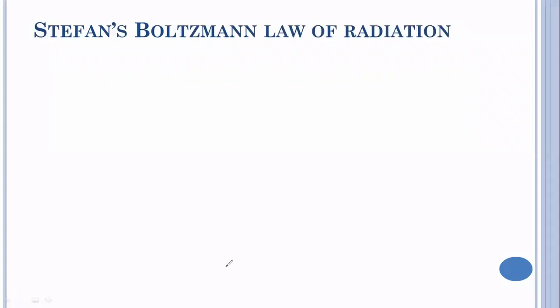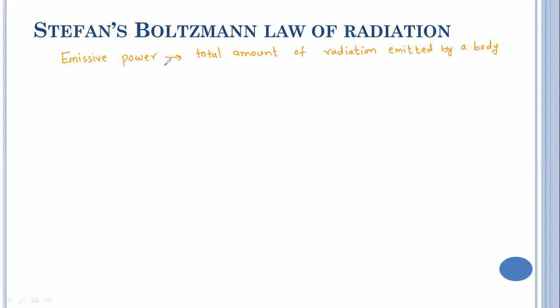Now let us see the law related to this topic. First, you have to define emissive power. Emissive power is defined as the total amount of radiation emitted by a body per unit area and per unit time. So emissive power of any body means how much energy that body is emitting per unit area and time.